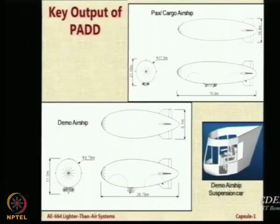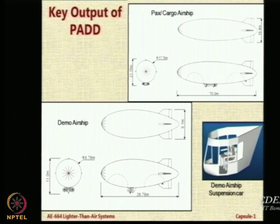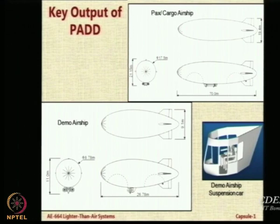I have taken some pictures from the report we submitted. This is a key output of the designs. As students of design would understand, the typical output from a design study is a three-view diagram along with complete specifications of the system, which are in my project report and I will be happy to share parts of it. The papers I mentioned will be put on a Moodle page so you can go through them at leisure. But no need to worry — this methodology will be taught as part of this course as one of the important capsules.